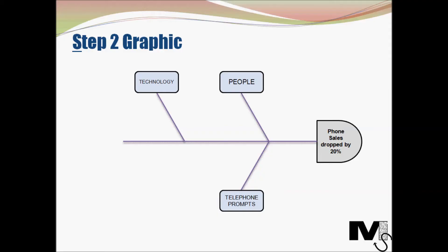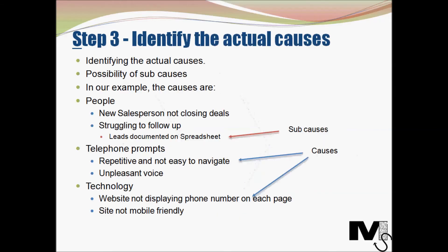The next step is to identify the actual causes. Here we go deeper and produce the actual factors that affect each cause category. Brainstorming with relevant people is the most widely accepted method to identify actual causes. There is also a possibility of sub-causes which affect the actual causes and these can branch out of the actual causes — you will see all of this in the example.